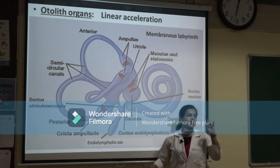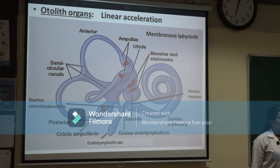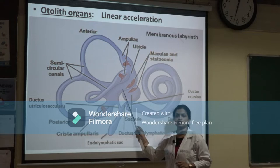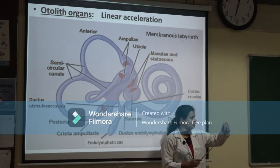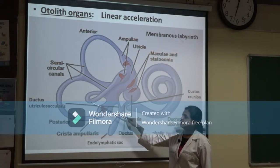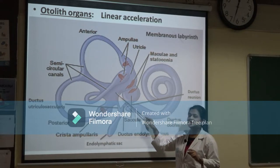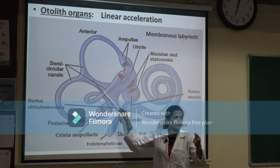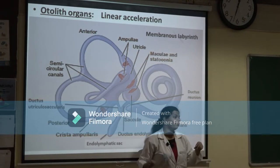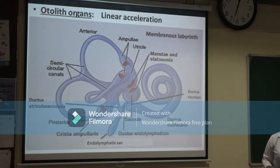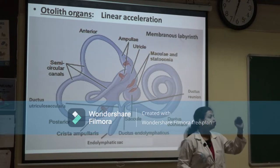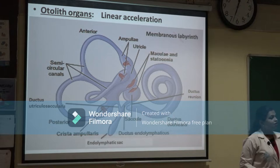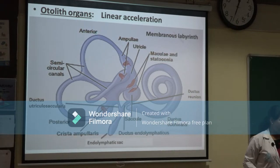Although there are three canals, there are only five openings into the utricle — not six — because the anterior and posterior semicircular canals merge their narrow ends and open together. The dilated end of all three canals has its own opening. The crista ampullaris is present only in the dilated end — the ampulla — not in the narrow end.